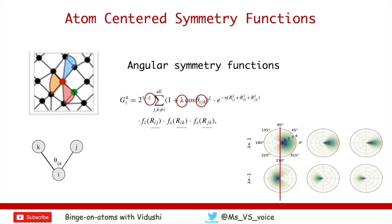Lambda shifts the maxima of cosine function cos(theta_ijk) as you can see here. If lambda is plus one, the maxima of cosine function is focused at zero degrees. If lambda is negative, maxima is focused at 180 degrees. Notice the blue portions in lambda equals to one and lambda equals to minus one, they are flipped from zero to 180 degrees.